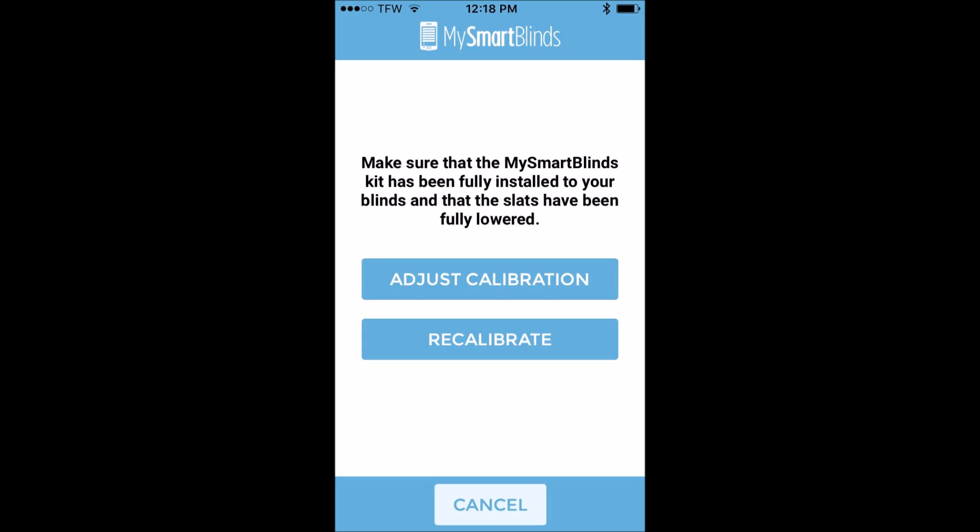Most of the features of My Smart Blinds are contained within the application. What you're looking at on the screen right now is a screenshot from one of the My Smart Blinds apps. After you've finished the installation of the motor and reinstalled the blinds into your window you'll begin the process of setting up the programming.